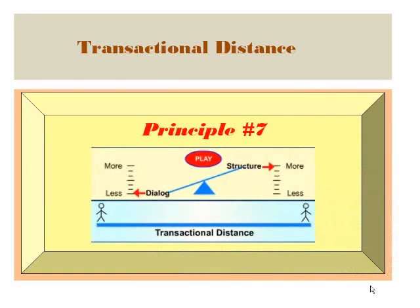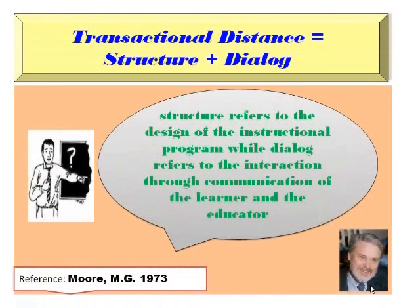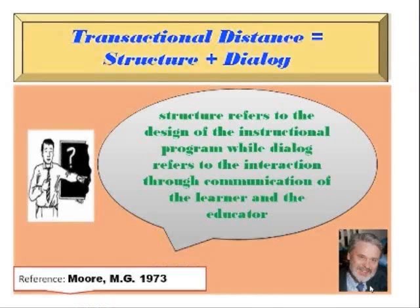Principle 7: Transactional distance equals a balance between structure and dialogue. Moore recognized that in a course high in structure, such as a pure lecture course, there is generally little dialogue between the educator and learner, and transactional distance is maximized. Conversely, as dialogue is increased, the structure decreases, thereby minimizing the transactional distance between educator and learner.